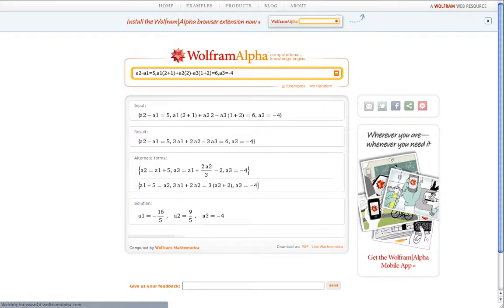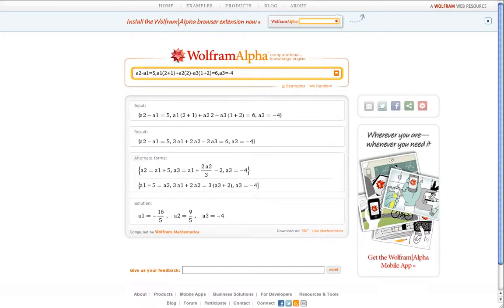And through the magic of the internet, we get basically that A1 is minus 16 fifths, which in a decimal form is negative 3.2. A2 is 9 fifths, which is 1.8. And A3, surprisingly enough, is minus 4. Actually, I hope you weren't surprised at that.